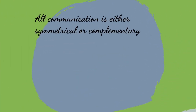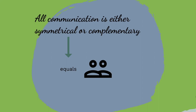All communication is either symmetrical or complementary. This axiom refers to the status of the people in communication. A symmetrical interaction means both partners see each other as equals. In complementary communication, however, there is a quality of an inferior-superior relationship — a power difference which often results from socially assigned roles. Think of communication between teachers and pupils, boss and employees, or parents and children.